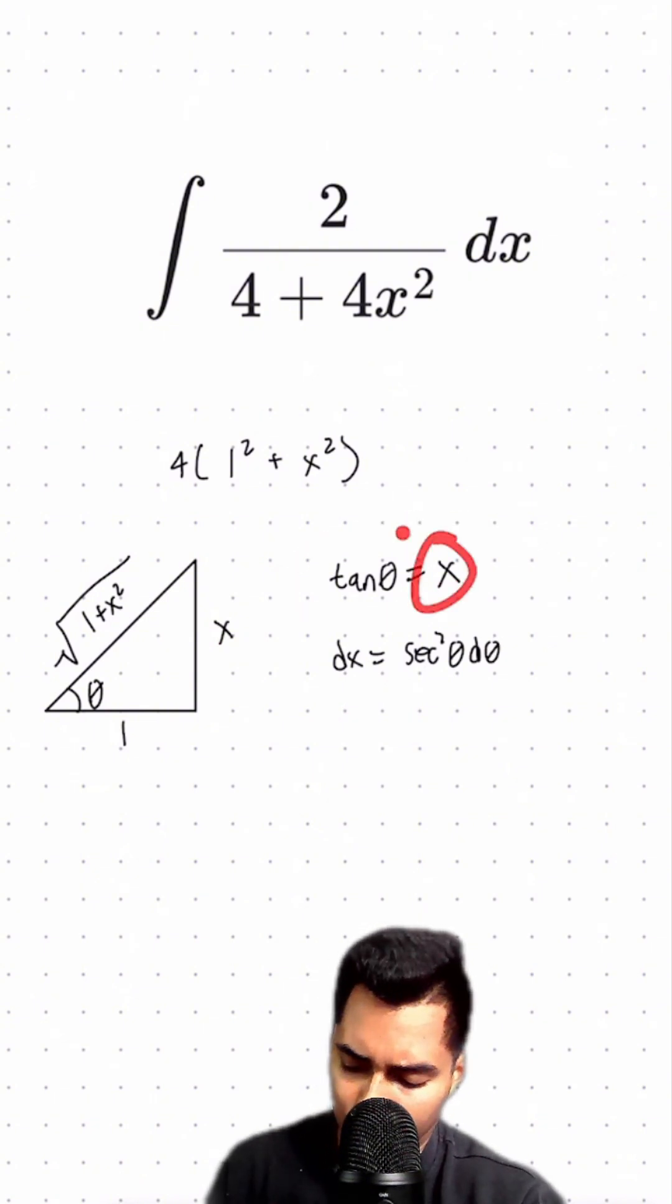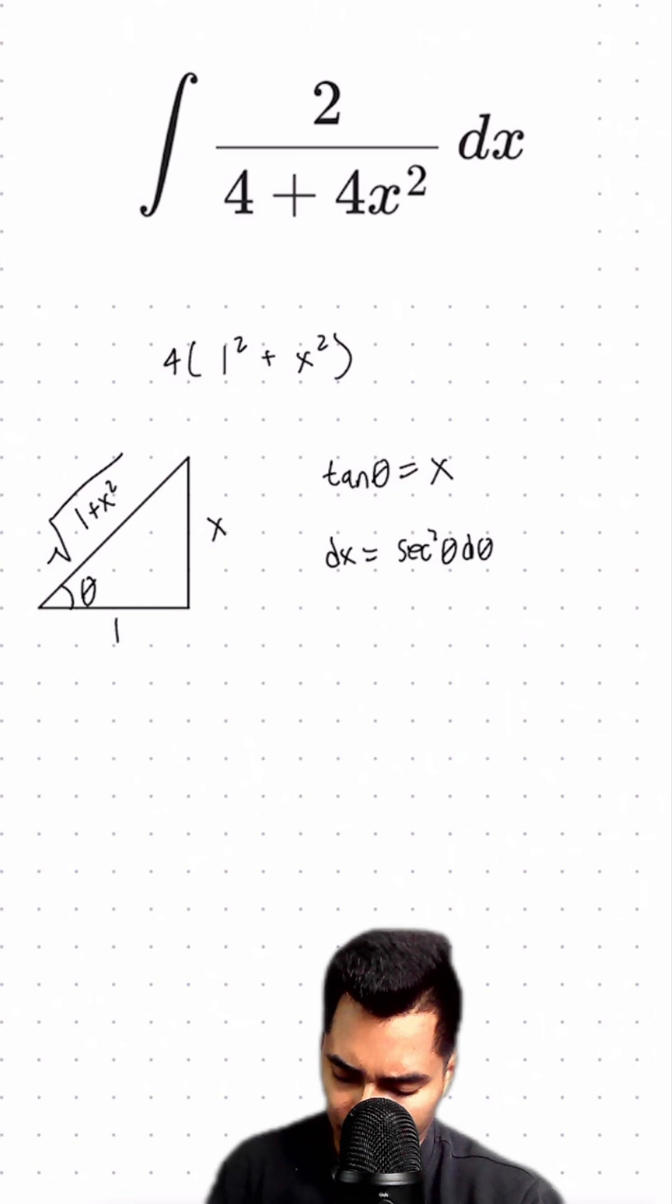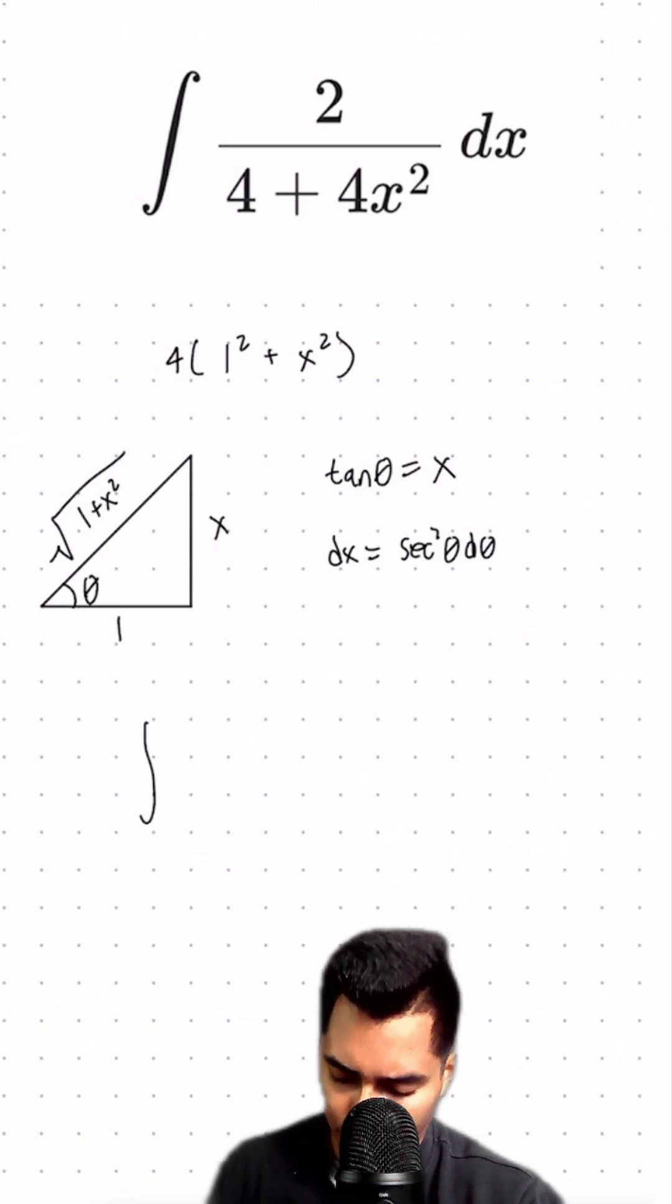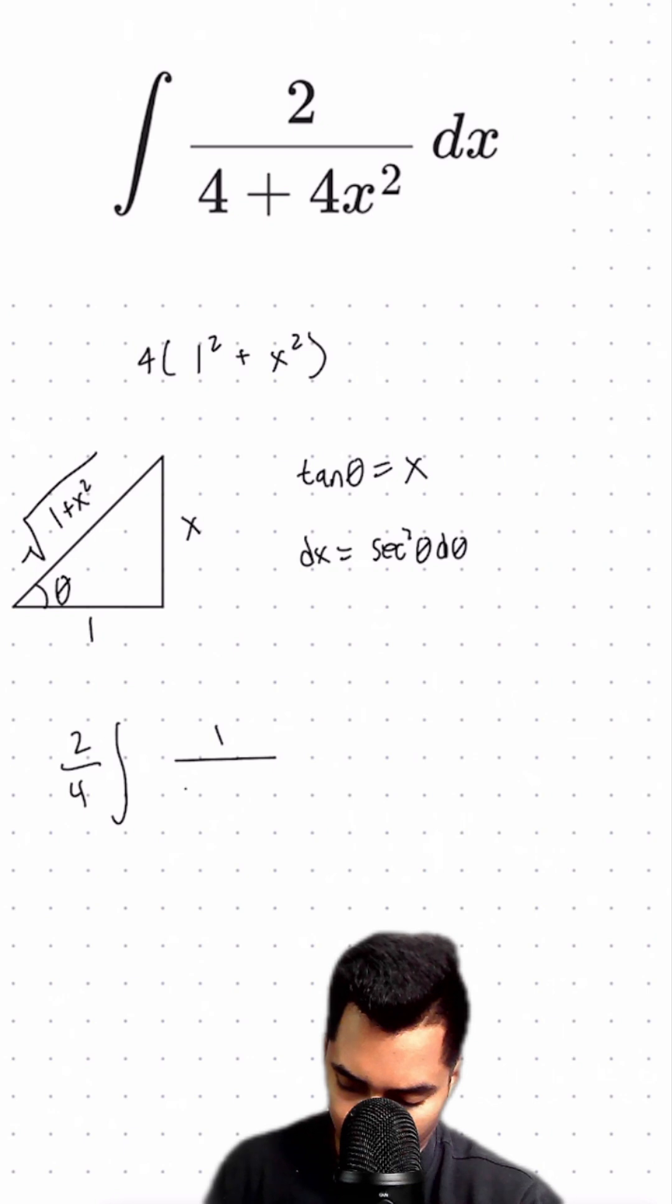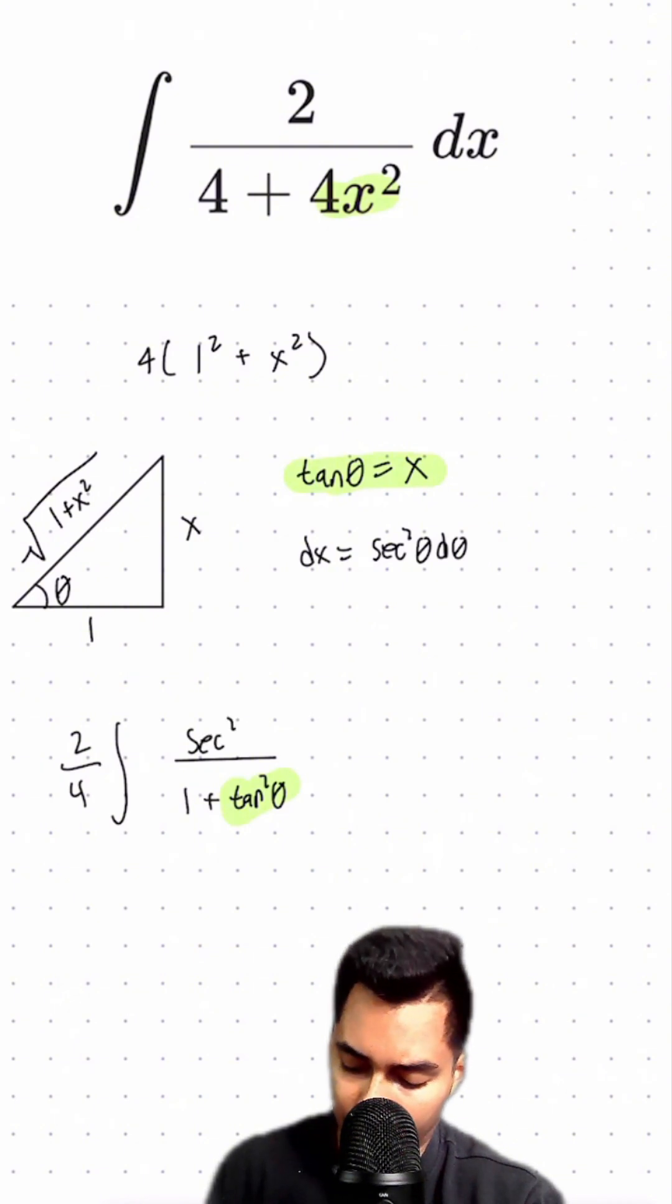So x equals tangent theta. I'm going to rewrite the integral by pulling the 2 and the 4 outside, giving us one-half times the integral of 1 over 1 plus tangent squared theta times secant squared theta d theta.